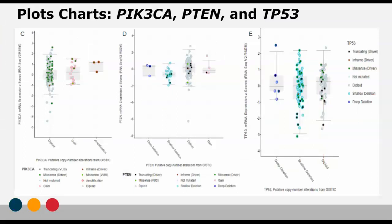Here are the plot charts for PIK3CA, P10, and TP53, and there is a complete difference in these charts versus CDK12 and MZ. PIK3CA and P10 had increased mRNA expression when these genes were diploid. However, for TP53, its mRNA expression was increased when TP53 was deleted.